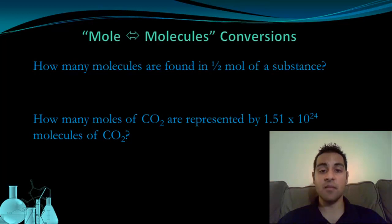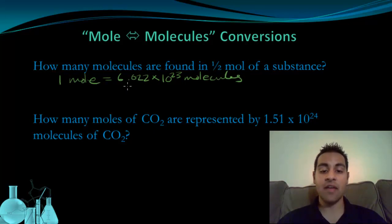Here are some situations that may come up where we can get some practice with converting between moles and molecules. The first example asks how many molecules are found in half of a mole of a substance. Well first of all, I know that one mole is 6.022 times ten to the twenty-third molecules. So intuitively, if I have half of a mole, I should have half of this number. Half of a mole would be half of this number, which would give me 3.011 times ten to the twenty-third molecules in half a mole.